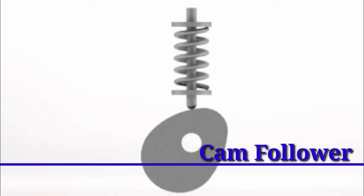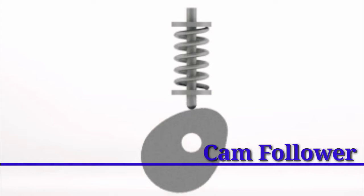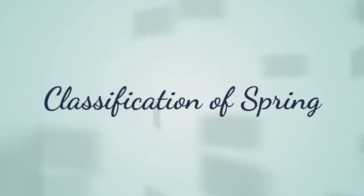Now we will see the classification of springs. We can identify five main types: first is helical spring, second is spiral spring, third is disc spring, fourth is block spring, and fifth is leaf spring. We will now see a small introduction to each of these springs.